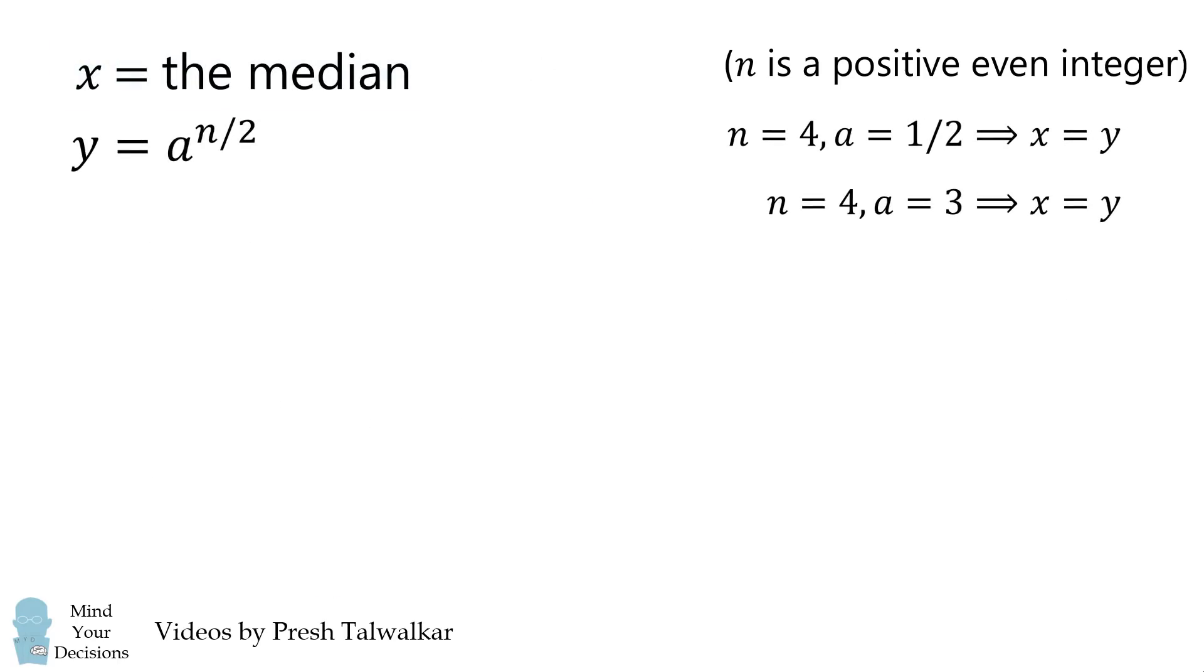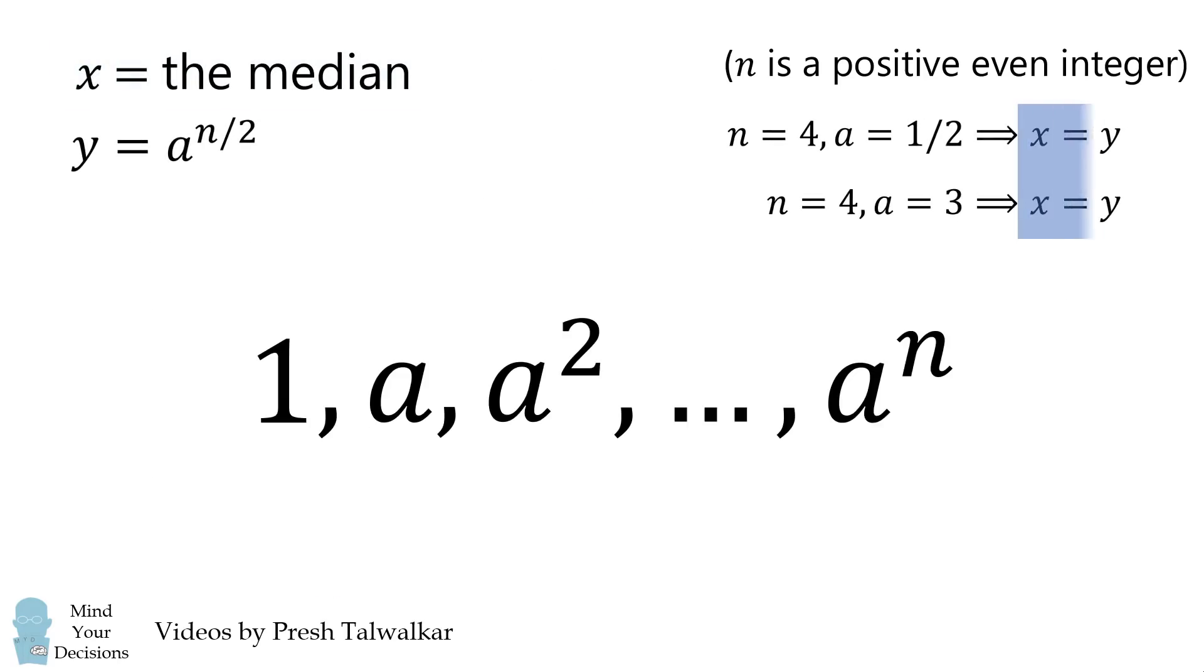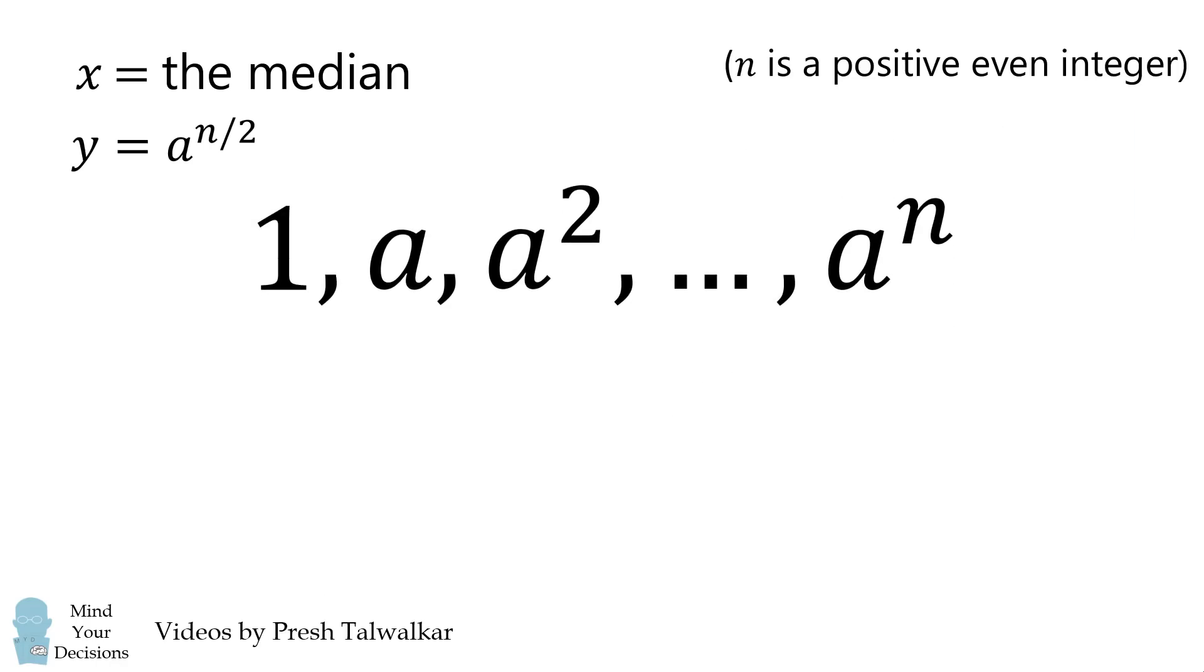From these particular examples, one might conclude that x is always equal to y. Well, this is actually true if a is positive. In that case, the sequence is either increasing or decreasing, and the median will be a to the power of n over 2, which is exactly equal to y.